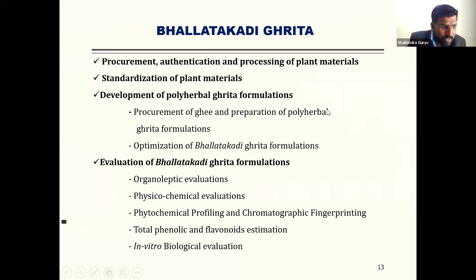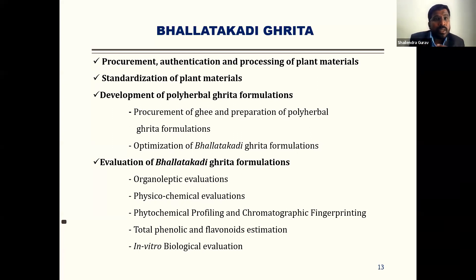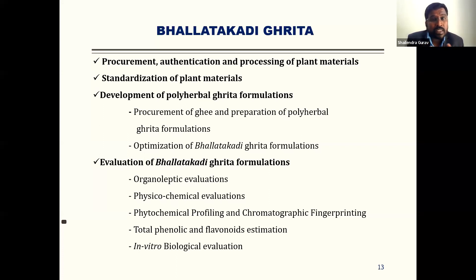Plant material standardization and authentication is critical in herbal research. For example, in India, the drug Pashan Beda — used for kidney stone treatment — has seven different plants known by the same name, including Bergenia ligulata. Vernacular names vary from place to place: even in Maharashtra, Kadipatta in Western Maharashtra is known as 'gold limb' in Vidarbha region. So proper authentication is equally important.